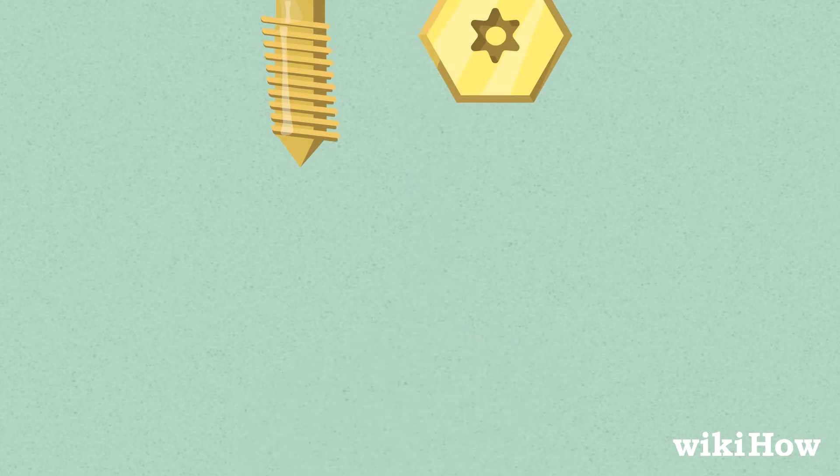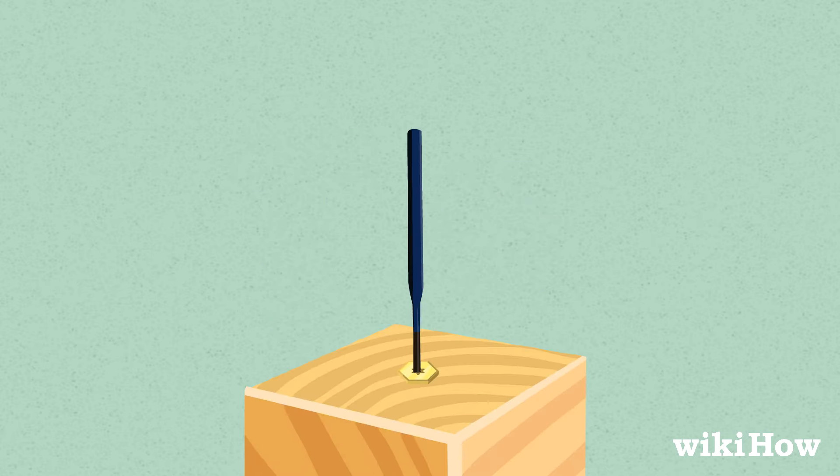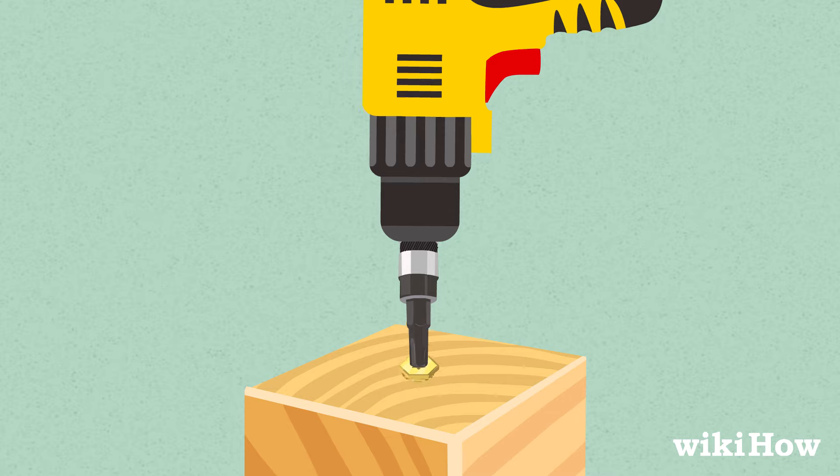For Torx security screws, place a small punch or nail in the top of the screw and tap it with a hammer. This will knock out the central pin, making it easier to remove the screw. You can also drill a small hole in a non-security Torx driver bit of the right size so the bit can accommodate the pin.